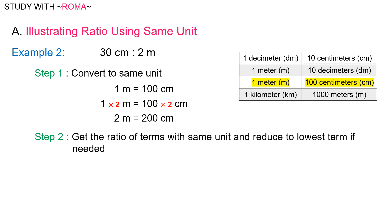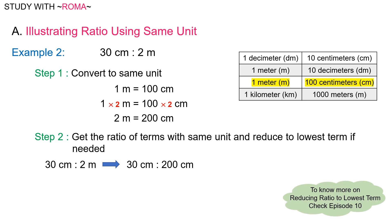Step 2: get the ratio of terms with the same unit and reduce to lowest term if needed. 30 centimeters is to 2 meters will be 30 centimeters is to 200 centimeters. Now we will reduce to lowest term. The greatest common factor of 30 and 200 is 10. So 30 divided by 10 is to 200 divided by 10, which is equal to 3 is to 20.